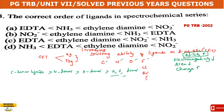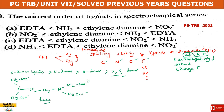Now consider EDTA — ethylenediamine tetraacetate. It is hexadentate: it has 2 nitrogen donor atoms and 4 oxygen donor atoms, giving 6 donor atoms total. So EDTA donates through a combination of nitrogen and oxygen. Ammine (NH₃) donates through nitrogen. Ethylene diamine has 2 nitrogen donor atoms.